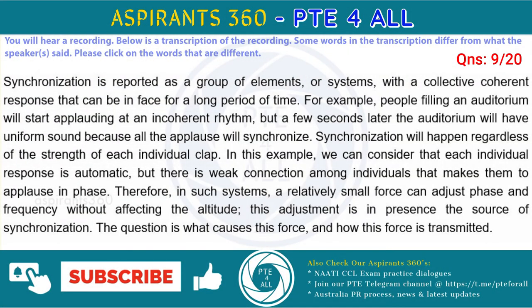Synchronization is revealed as a group of elements, or systems, with a collective coherent response that can be in phase for a long period of time. For example, people filling an auditorium will start applauding at an incoherent rhythm, but a few seconds later the auditorium will have uniform sound because all the applause will synchronize. Synchronization will happen regardless of the strength of each individual beat. In this example, we can consider that each individual response is autonomous, but there is weak connection among individuals that makes them applaud in phase. Therefore, in such systems, a relatively small force can adjust phase and frequency without affecting the amplitude — this adjustment is in essence the source of synchronization. The question is what causes this force, and how this force is transmitted.